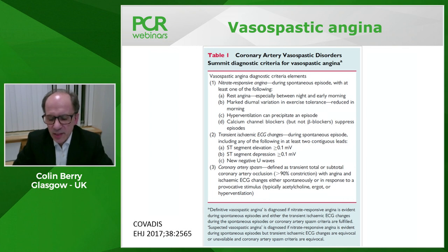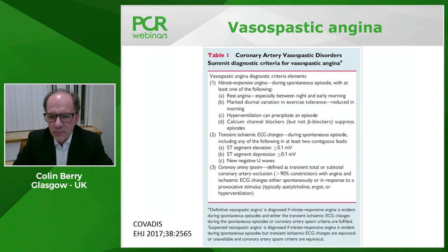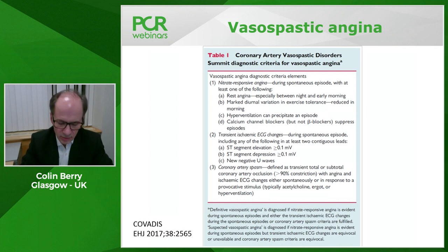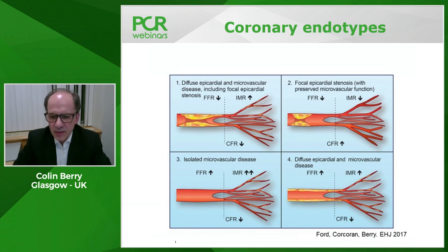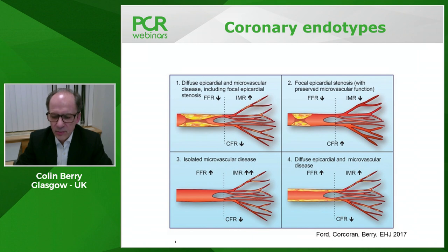Let's not forget about vasospastic angina, which may occur in isolation or in association with microvascular angina. The Covadis group criteria include: nitrate-responsive, transient ischemic ECG changes, and coronary artery spasm revealed by provocative testing and angiography. This can be assessed in the catheter laboratory by examining coronary atherosclerosis on angiogram, using a diagnostic sensor for flow-limiting disease, and using thermodilution or Doppler to assess microcirculatory dysfunction — whether increased resistance or impaired vasodilator reserve.